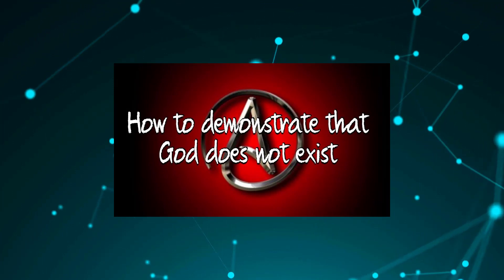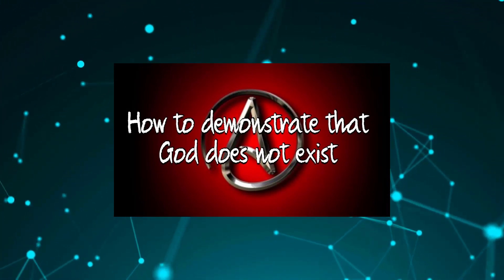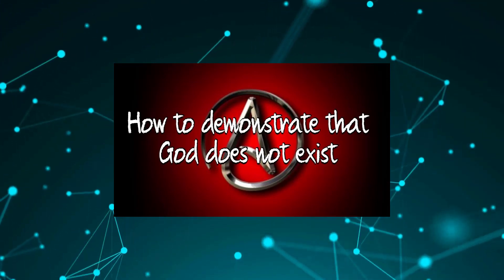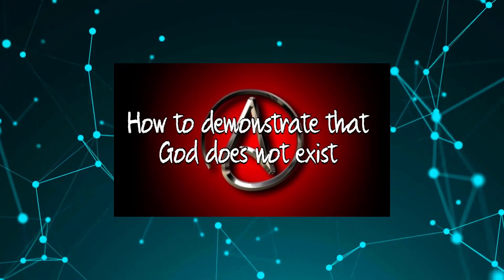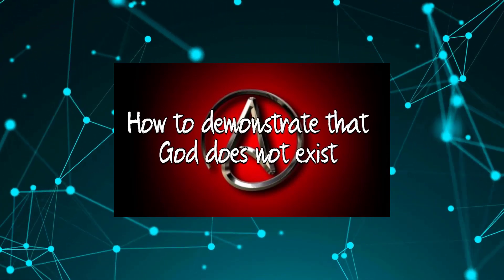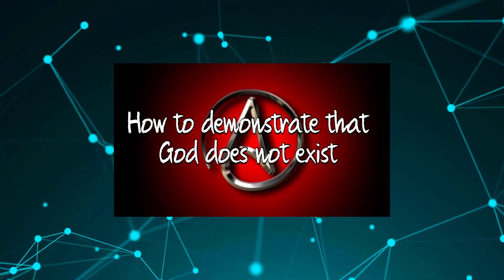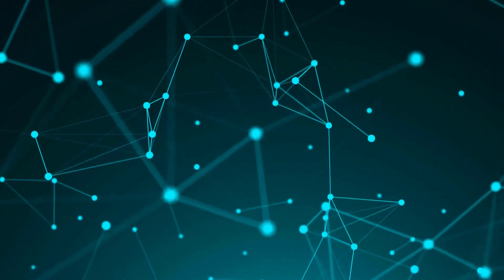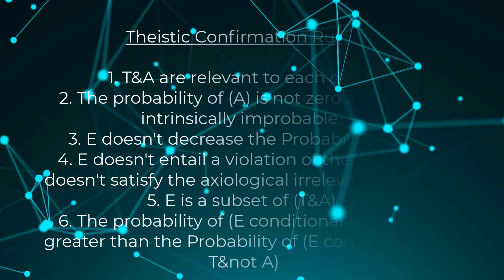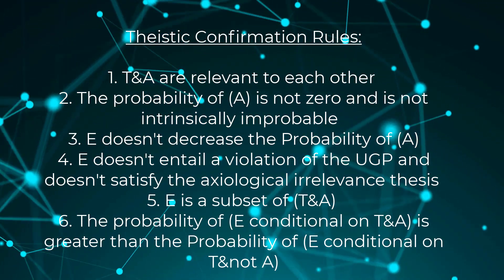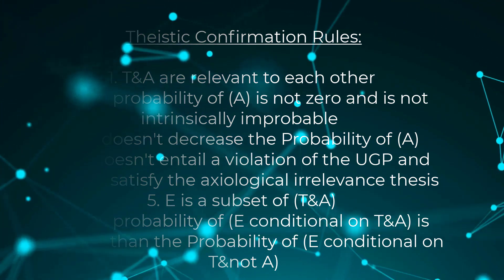In a previous video, I've already given criteria on what would count as evidence against theism directly. One must show either a violation of the ultimate goodness principle, or show that there is actually axiological irrelevance — that there cannot be a plausible axiology that can be conjoined with theism to predict the data. Since theism cannot make predictions on its own, any evidence against theism must be filtered through the rules we laid out. One cannot simply claim they have found evidence against theism when it has not passed the filters.